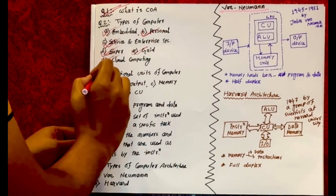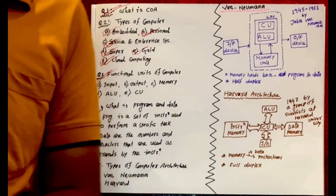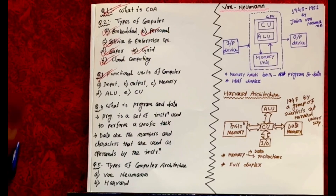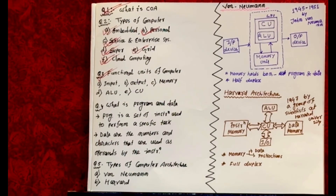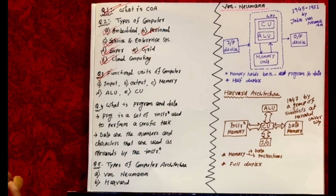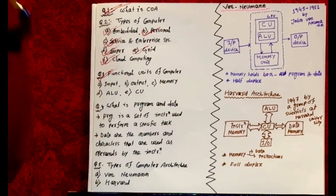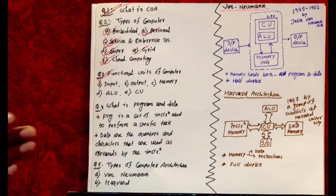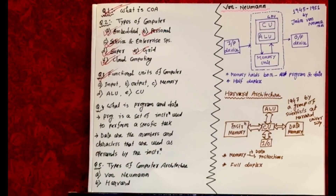The next basic question is: what are the functional units of a computer? You can easily answer — those are input devices, output devices, memory, ALU (Arithmetic and Logical Unit), and CU (Control Unit). These are the five functional units we have known since class 10. We will discuss all these things in detail in future classes.